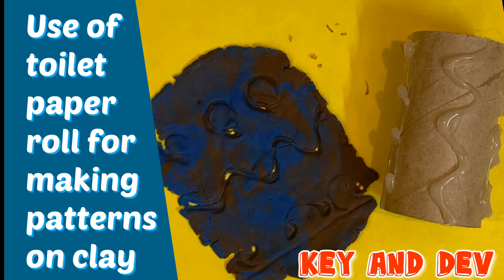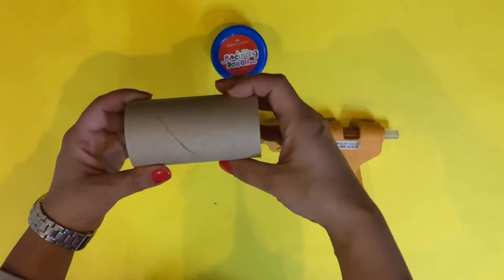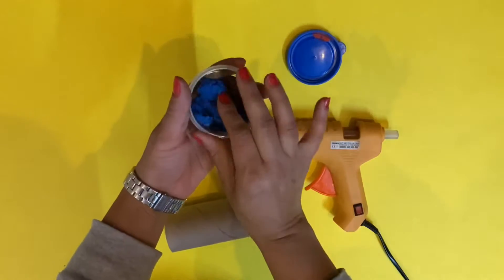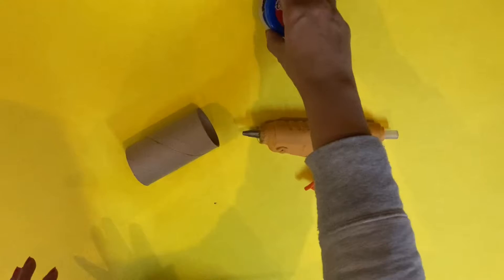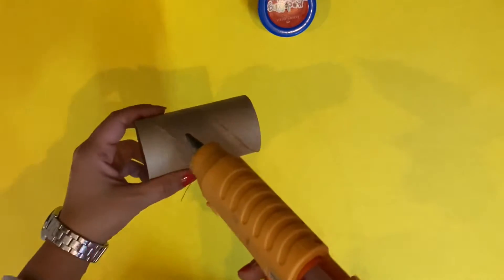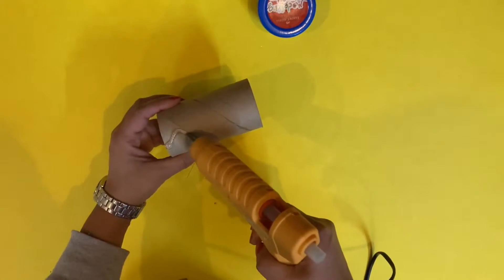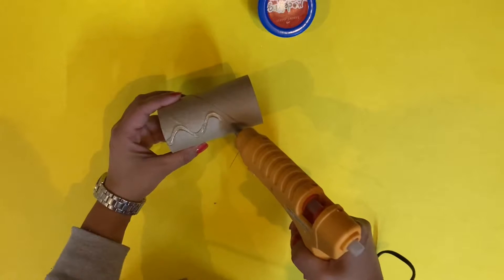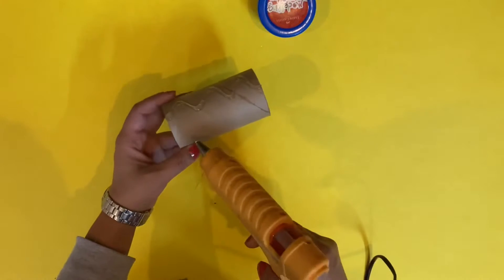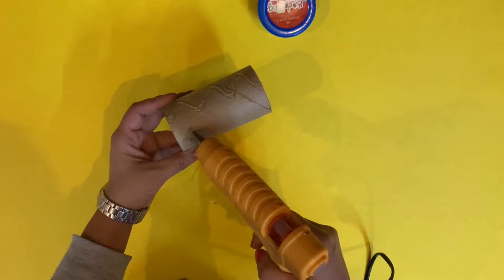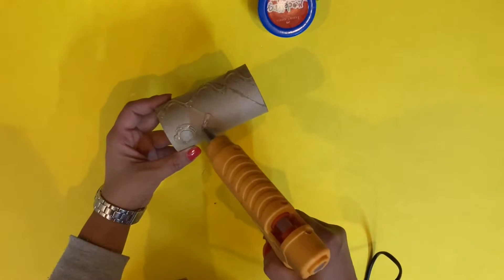Hello everyone, welcome to our channel Key and Dev. Today in this video we are going to use an empty toilet paper roll for making patterns on clay. We just need a glue gun for making different patterns on the toilet paper roll. You can make different patterns like a sine wave, or circle, or square, or triangle.